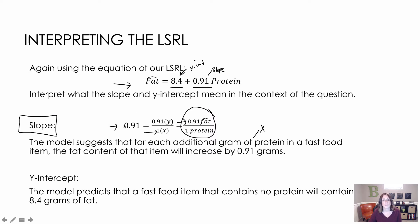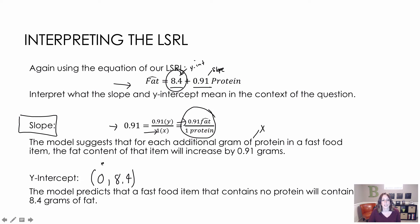The y-intercept is a little bit easier. My y-intercept is 8.4, which represents the point (0, 8.4). So 0 x's means 8.4 is y. The model predicts that a fast-food item containing no protein — 0 grams of protein — will contain 8.4 grams of fat. That makes sense in this particular context.